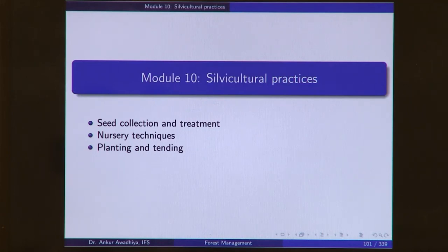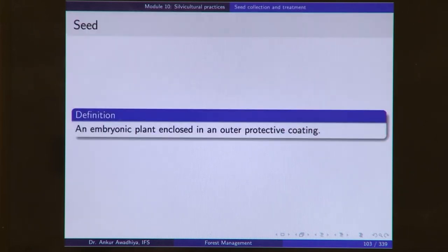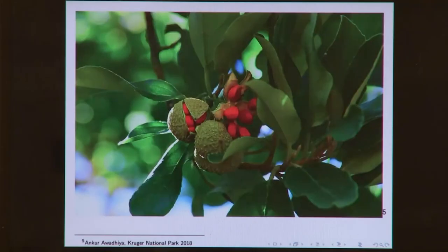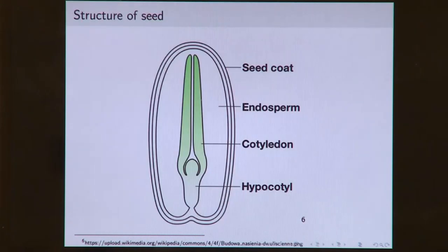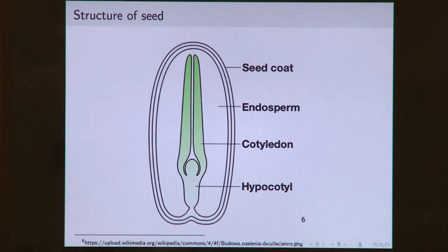In module 10, we looked at silvicultural practices: seed collection and treatment, nursery techniques, planting and tending. In seed collection, we defined seed as an embryonic plant enclosed in an outer protective coating. The seed has an outer protective coating in the form of a seed coat, the embryonic plant shown as the cotyledons — the leaves and the hypocotyl — and endosperm which provides food to the embryo.